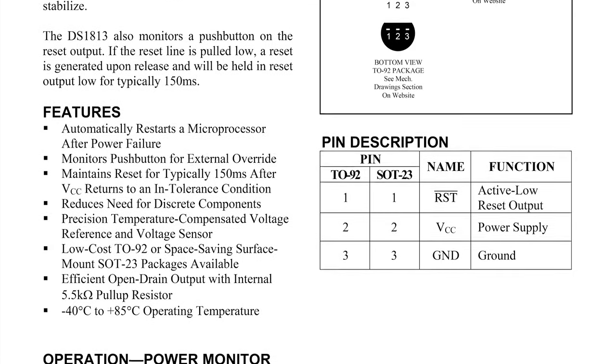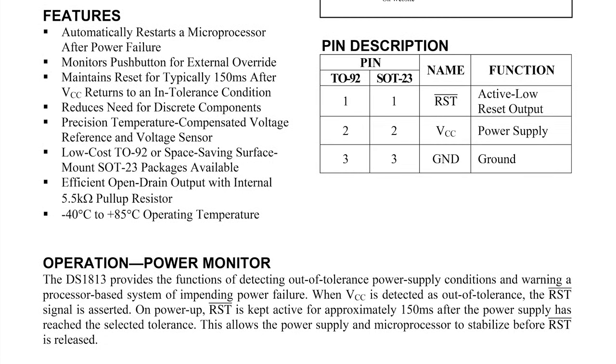When the DS1813 detects an out-of-spec voltage, it generates an internal power fail signal, triggering an active low reset. Once VCC returns within specifications, the reset signal stays low for approximately 150ms, ensuring stability for the power supply and processor.